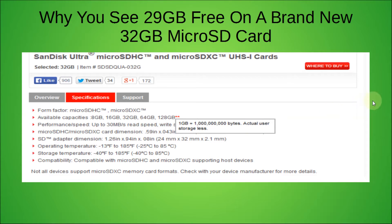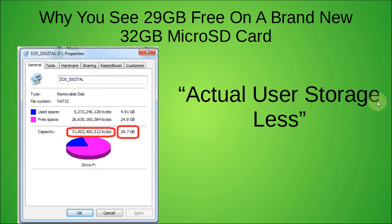I'm not sure exactly what they mean by that, but I'll show you what I see on my computer. I think what they mean by actual user storage less is that I'm actually getting 31,902,400,512 bytes on my card — not actually 32 billion bytes exactly, which is what I should get. I don't know if that's because there are errors on the card, or maybe the FAT32 file allocation tables are taking up some of that space, but I am getting less than 32 billion bytes.